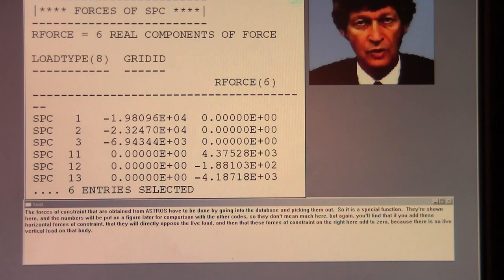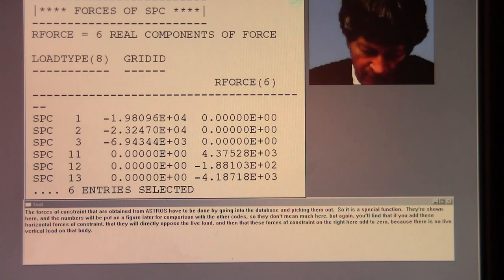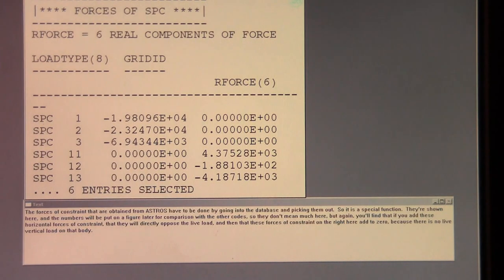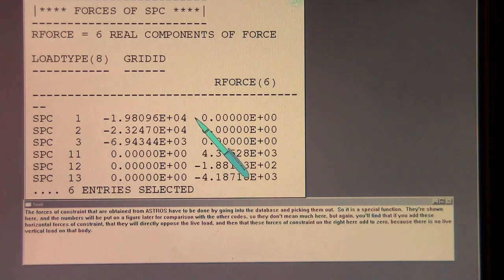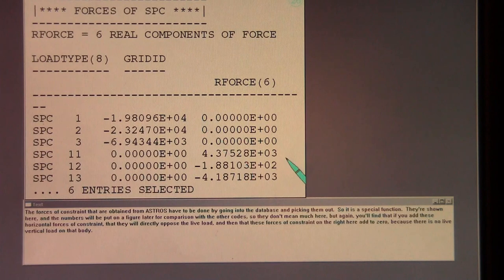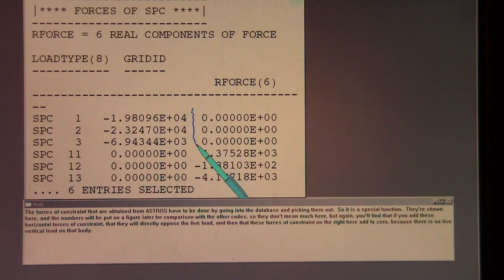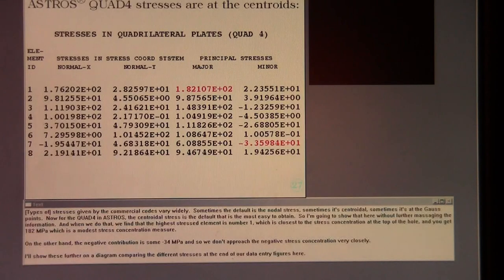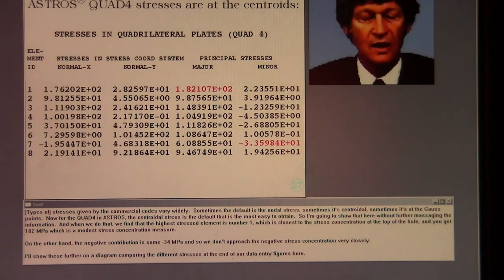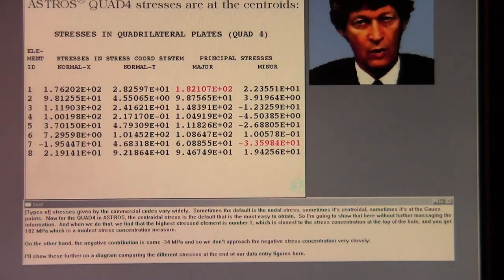The forces of constraint that are obtained from Astros have to be done by going into the database and picking them out. So it is a special function. They're shown here, and the numbers will be put on a figure later for comparison with the other codes, so they don't mean much here. But again, you'll find that if you add these horizontal forces of constraint, that they will directly oppose the live load. And then that these forces of constraint on the right here add to zero, because there is no live vertical load on that body.